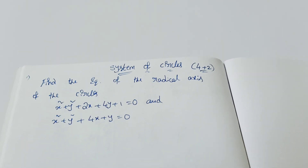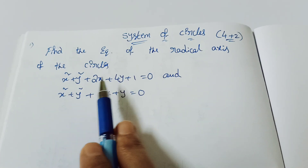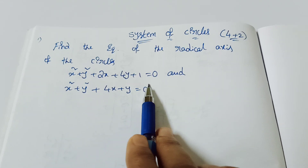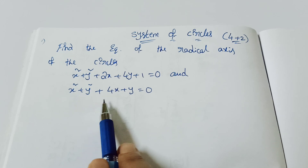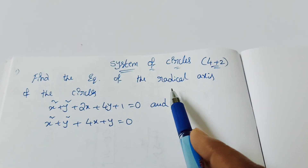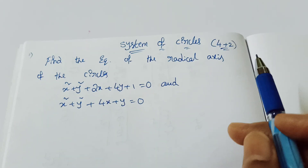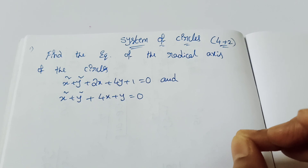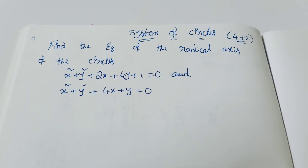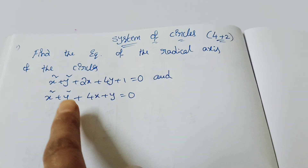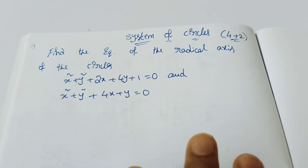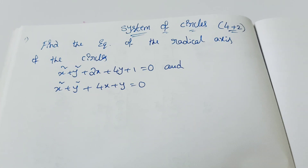If you want some easy questions and formulas, let's find the equation of the radical axis of the circles: x² + y² + 2x + 4y + 1 = 0 and x² + y² + 4x + y = 0. The formula for the radical axis is S minus S dash equal to 0, where S is the first circle and S dash is the second circle — just subtract the two equations.